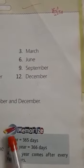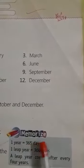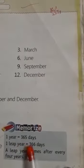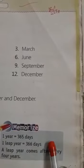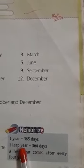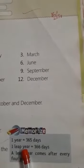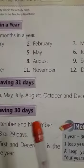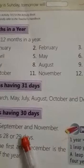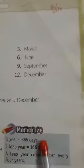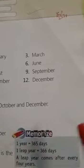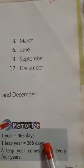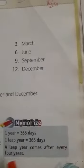So in this way, one year equals 365 days. The year with 366 days is called a leap year. What is a leap year? A leap year is a year in which February has 29 days — one extra day. So one leap year equals 366 days, and a leap year comes after every four years.